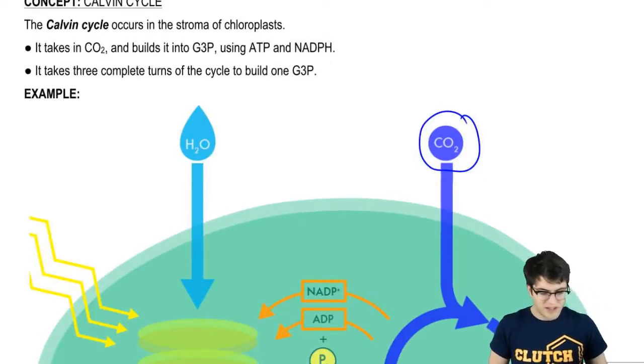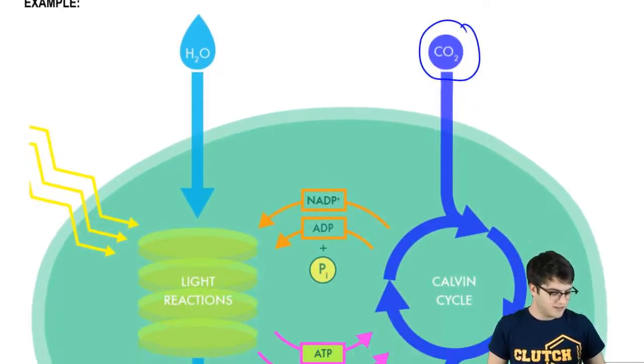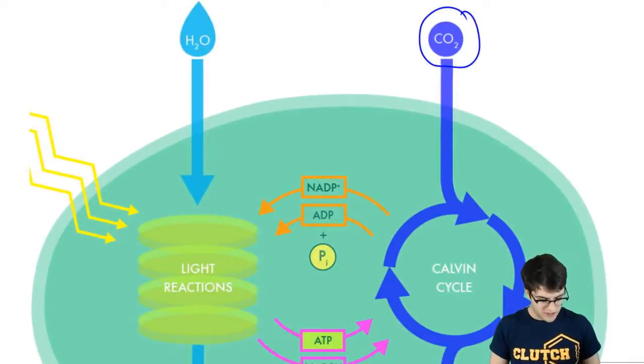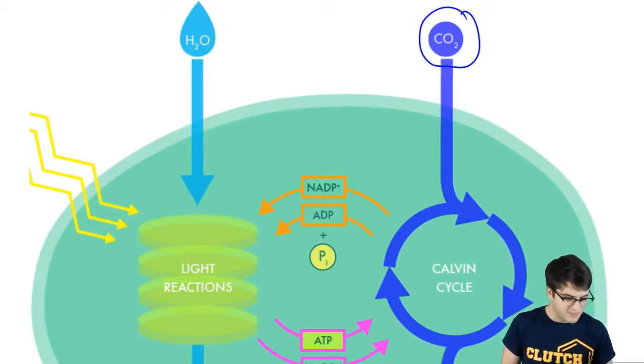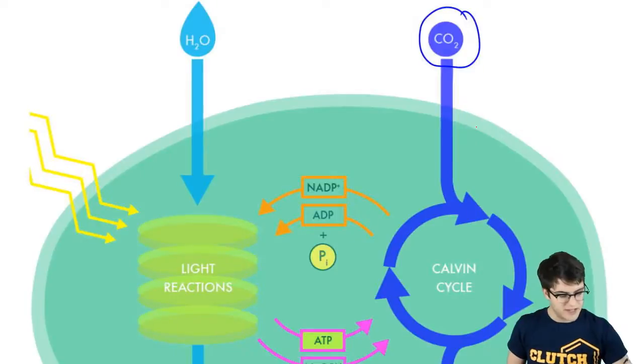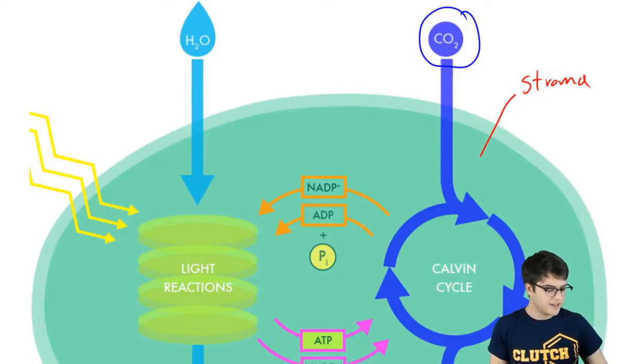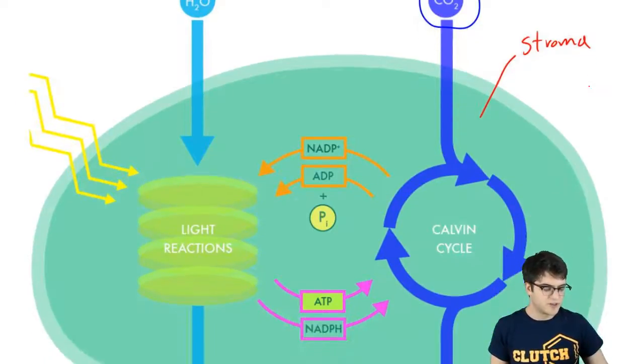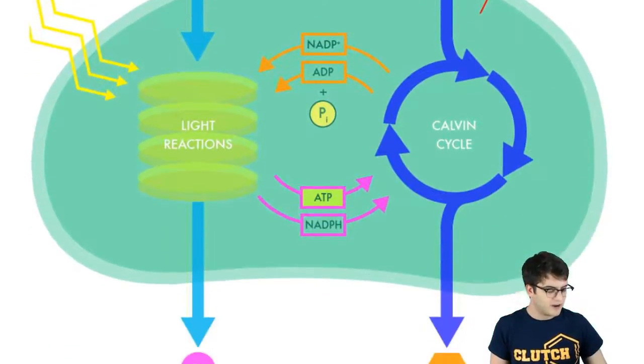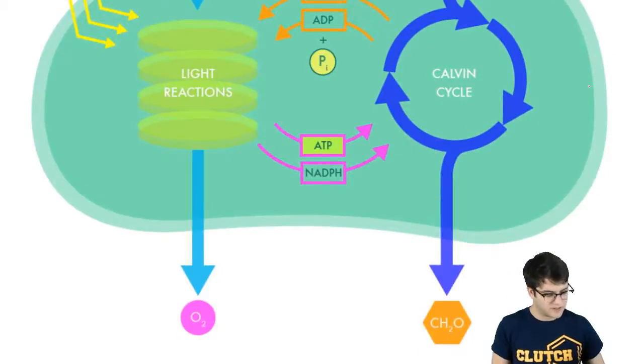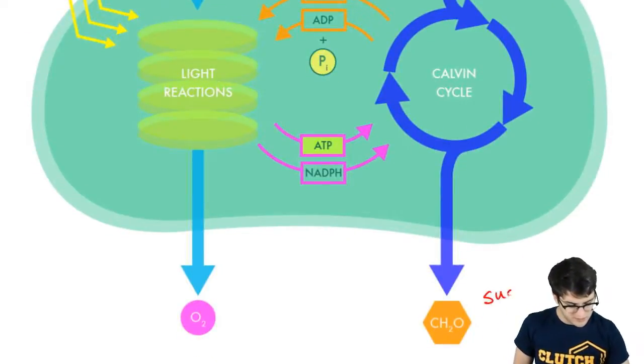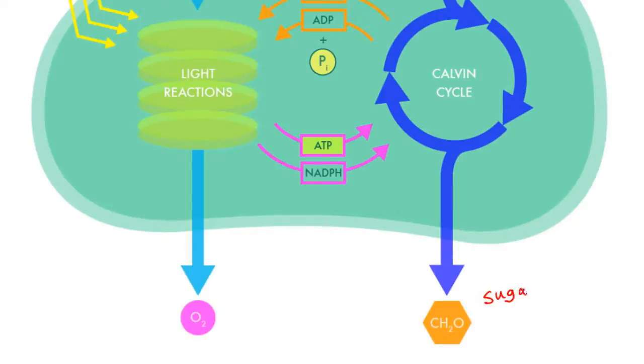Well, the Calvin Cycle also occurs in the chloroplasts, but it occurs in the stroma. And again, this is where the materials produced in the light reactions are going to be used to build sugar in the form of G3P.